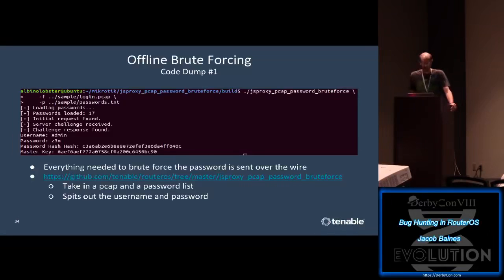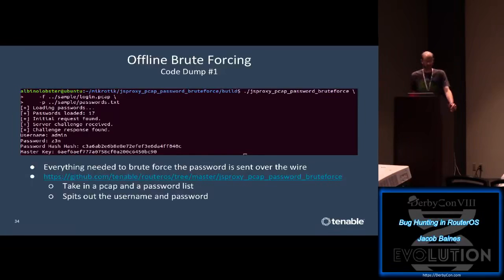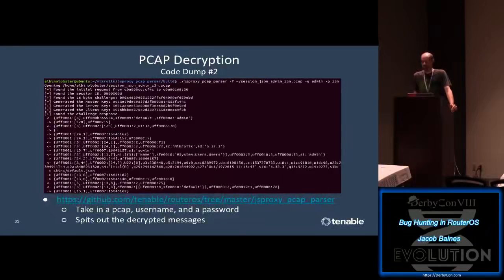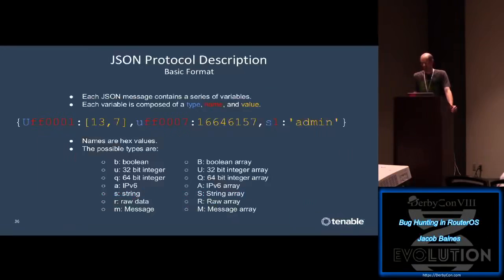Just last month MikroTik moved away from this implementation in their stable branch - they moved to Noise Protocol 4.3 which now uses a curve-based key exchange. Long-term is still expected to be vulnerable and as I showed earlier patching is not great on these systems. This tool decrypts the contents of a jsproxy session in a PCAP and writes the decrypted messages to standard out. From a 6.32.3 example, underneath the RC4 encryption we find a JSON-based message system.